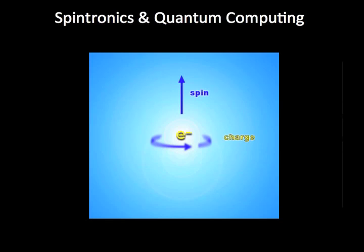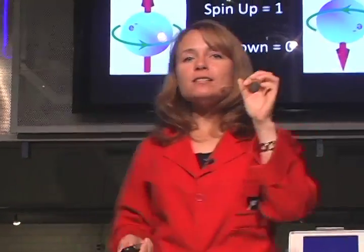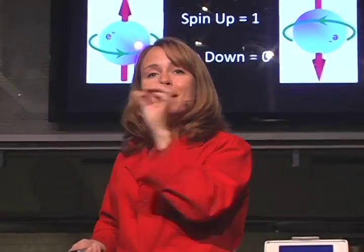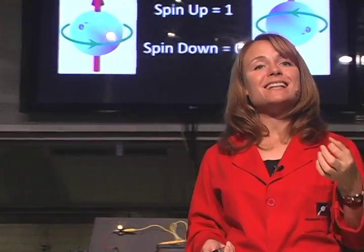Another idea is spintronics or quantum computing. While this does use electrons, it doesn't use the movement or charge of electrons — which is what electricity is. Instead, it uses other properties of electrons called spin. Electrons spin in one of two directions: spin up could represent the one of computing language, and spin down could represent the zero. Because we're talking about individual electrons, every single atom could store many, many pieces of information — many ones and zeros. It's very promising for high-density information storage and processing.